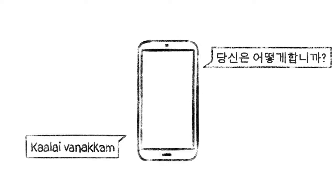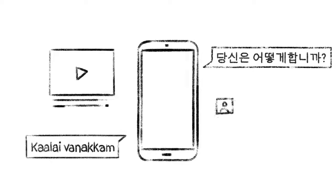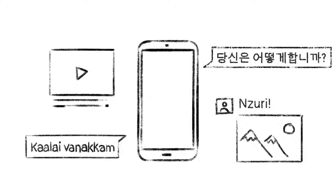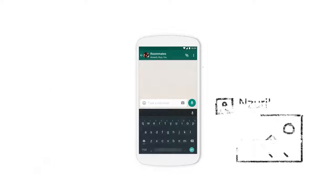We've all been there. You have something in your phone that you need to translate. Maybe it's a text from your coworkers, a YouTube comment, or a post from a friend. And you just need to know what it says.